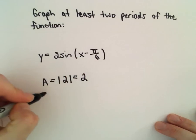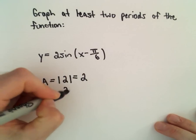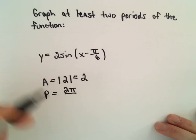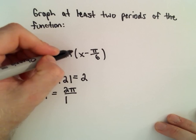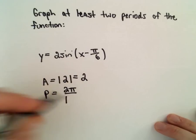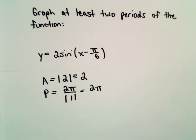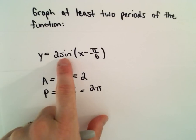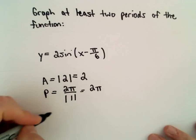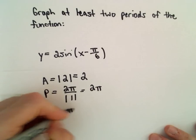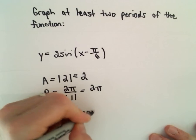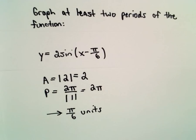The period is still going to be the same. The period is going to be 2 pi divided by the absolute value of b. In this case, your b value is a positive 1. So the period is still 2 pi, and it's going to look like sine x, except it's been shifted to the right, pi over 6 units.